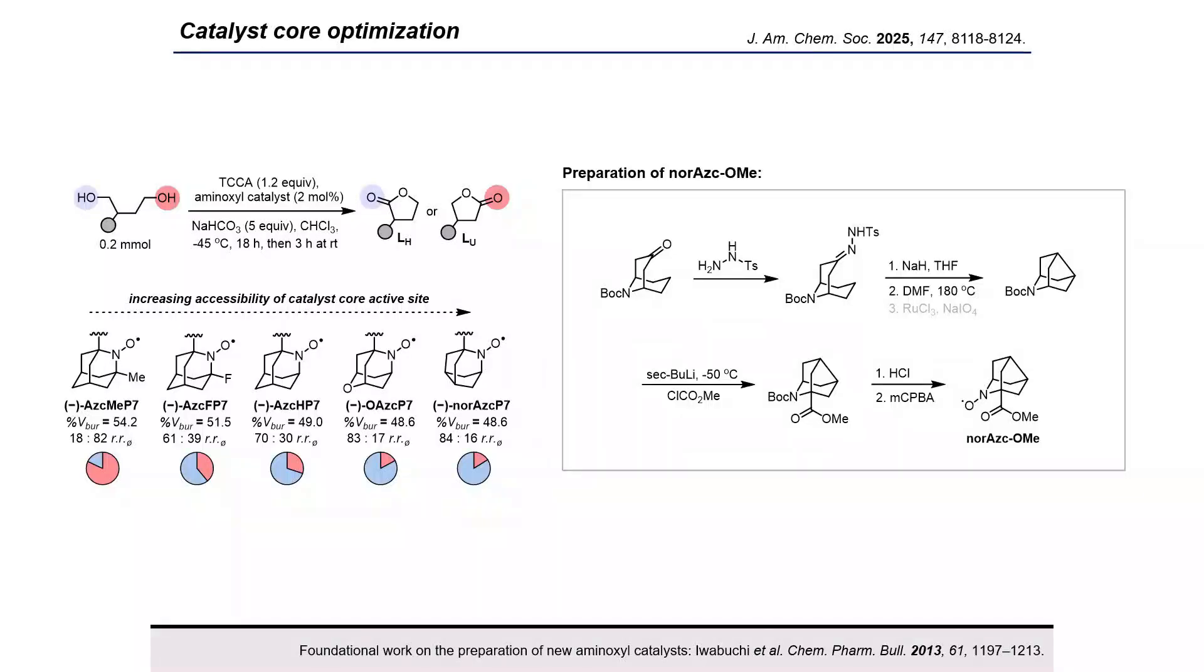Finally, we prepared norASC, in which a carbon was completely deleted from the skeleton in an attempt to push selectivity even further, but this did not provide much improvement and OASC was used moving forward due to ease of preparation. We also screened a variety of changes to the peptide, but P7 remained the most general structure for this transformation.